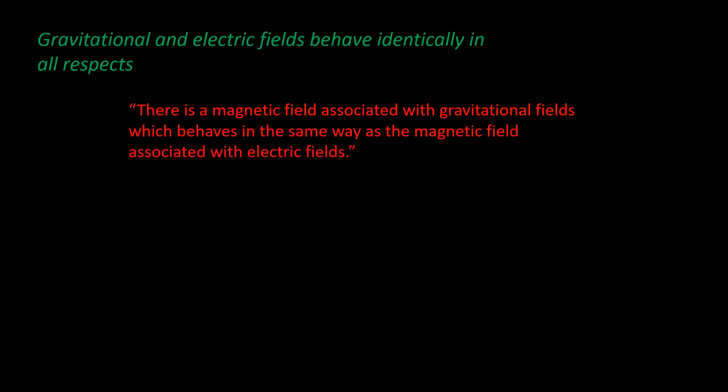And it is as follows. There is a magnetic field associated with gravitational fields, which behave in the same way as the magnetic field associated with electric fields. Let this field be represented by little b. Then the Maxwell's equations for gravity are as follows.